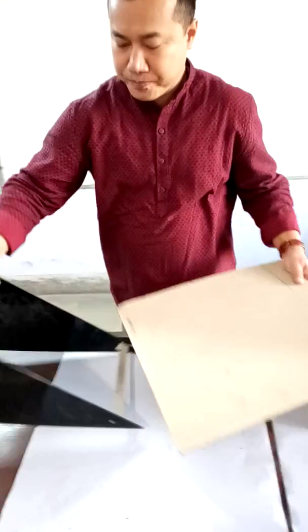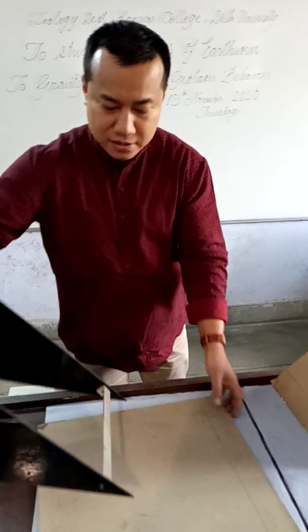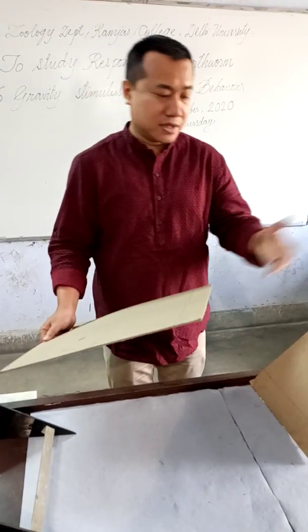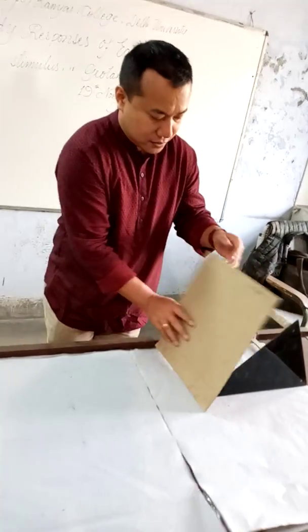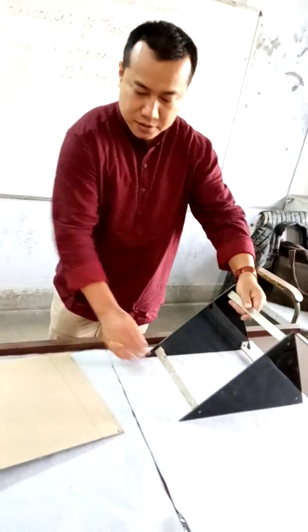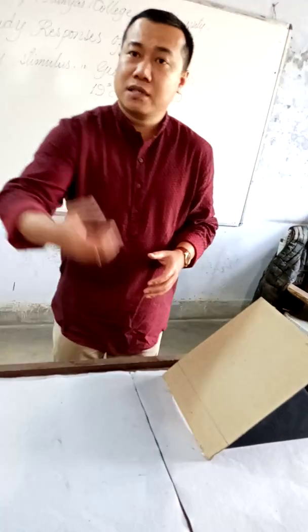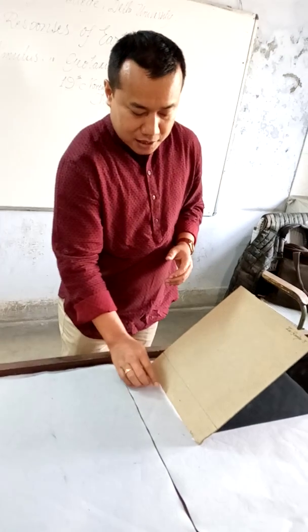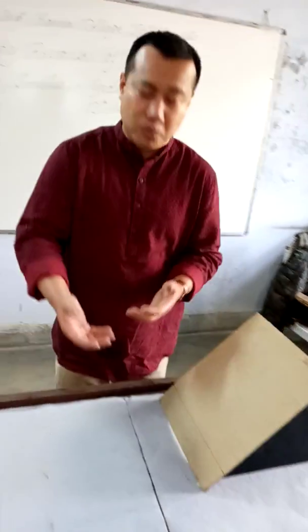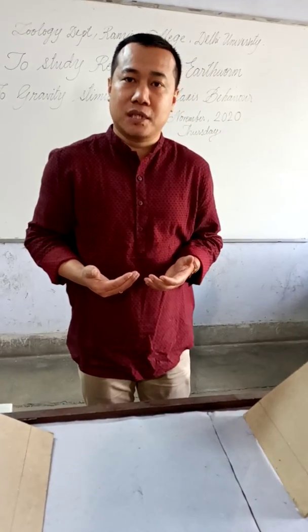We have models set at different angles — 30 degrees, 45 degrees, and 60 degrees. Suppose this is the filter paper; we release the earthworm here at 60 degrees. We put them in slanting positions and release earthworms of similar size, taken from the ground or from a supplier, and let them acclimatize first. Then we release those individuals and see how many are moving above the line and how many are not, within a stipulated time scale.